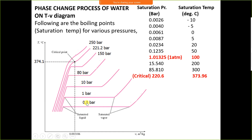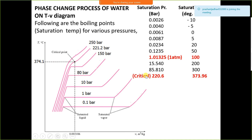As pressure increases from 0.1 bar to 1 bar, latent heat decreases; from 1 bar to 10 bar, it decreases further; from 10 bar to 80 bar, latent heat decreases while sensible heat increases. At 150 bar, latent heat continues decreasing. At 221.2 bar (critical pressure), latent heat becomes zero.